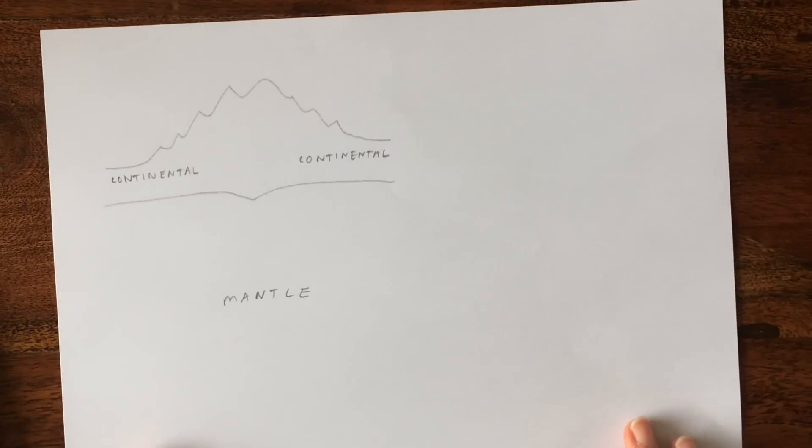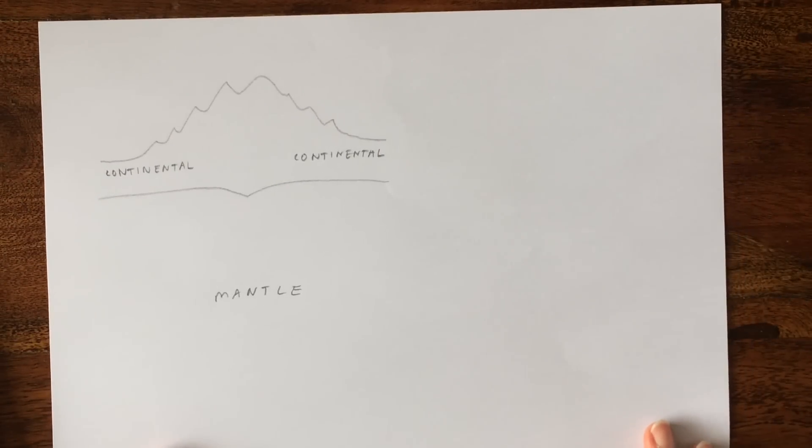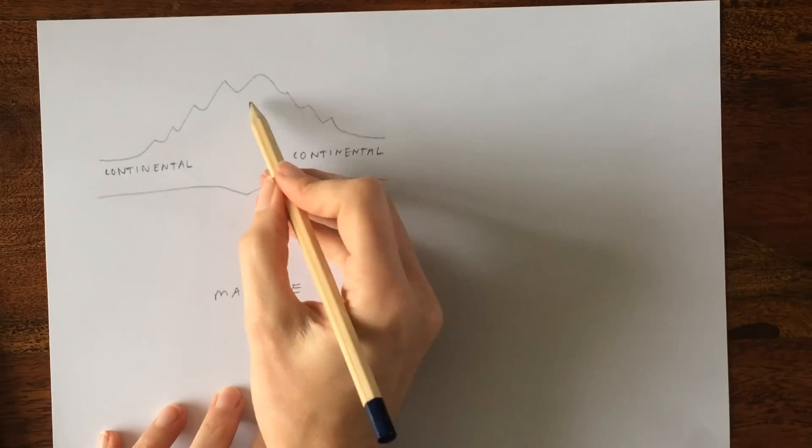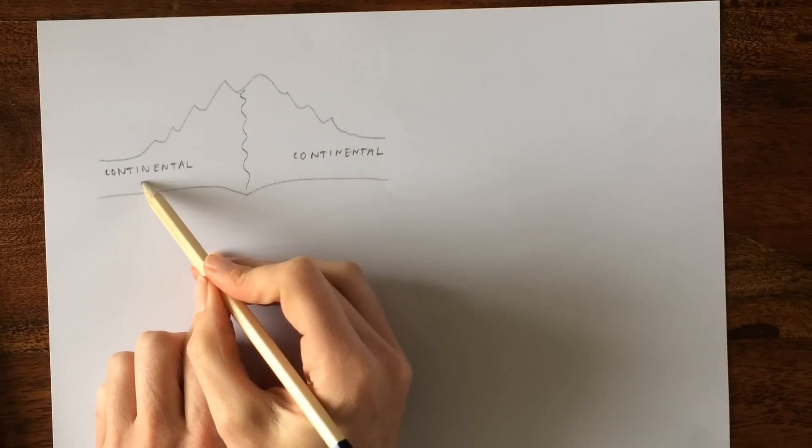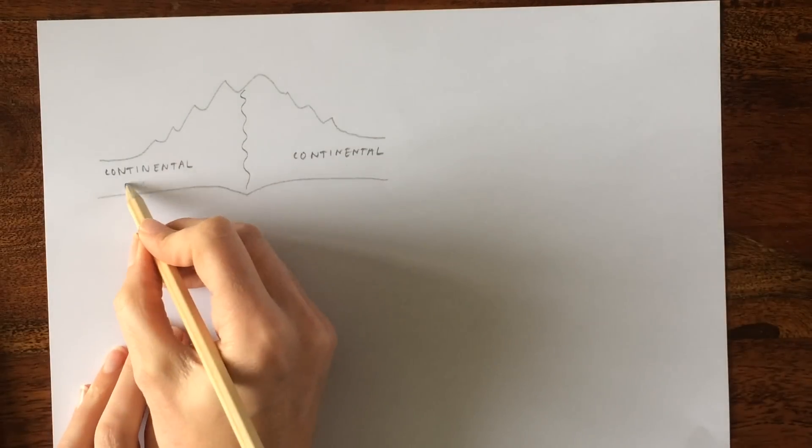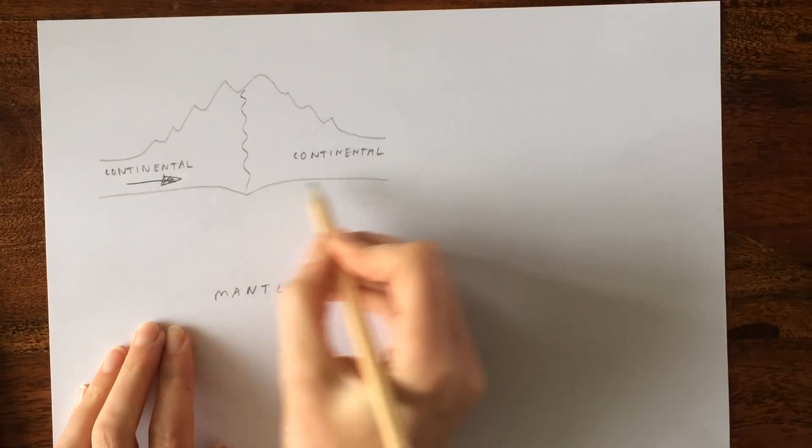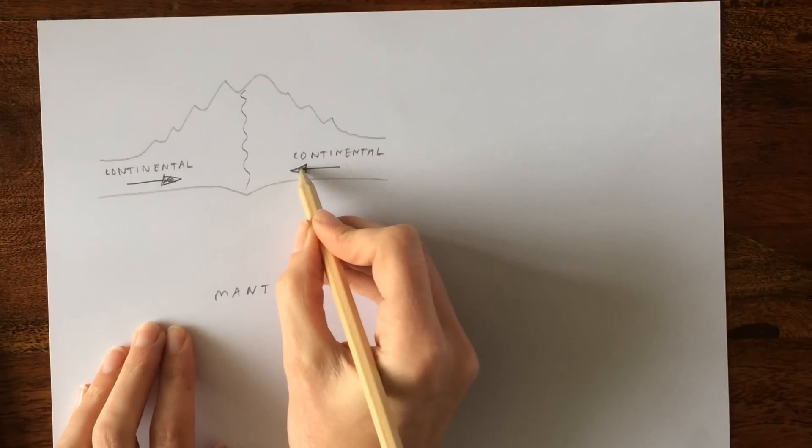Let's have a little look at the plate boundary then, and if you were to draw this as a diagram in an exam. So what we have here is our two pieces, let me put a line down the middle there, we have a piece of continental crust here and a piece of continental crust here, and don't forget we need to put our arrows on the diagram to show that they are moving towards each other.